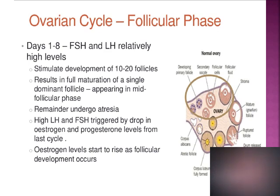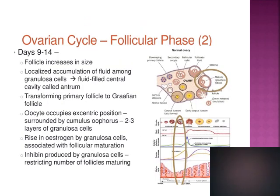As the follicles continue to mature, estrogen levels start to rise. From days 9 to 14, the follicle continues to grow in size. A fluid-filled space appears within the granulosa cells called the antrum. Once there is a large amount of fluid inside, it is called a Graafian follicle. The oocyte is pushed to one side, surrounded by layers of granulosa cells known as the cumulus oophorus. Estrogen continues to rise due to secretion by granulosa cells. Another hormone secreted by granulosa cells, called inhibin, functions to inhibit maturation of multiple follicles.